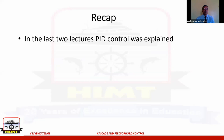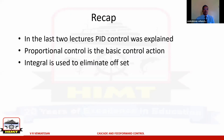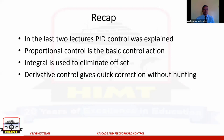To recap what we have already covered in the previous lectures: PID control was covered — proportional, integral, and derivative control, and combinations such as proportional plus integral and proportional plus derivative. Proportional control is the basic control action, integral control is used to eliminate offset, and derivative control gives a quick correction without hunting. P plus I is the most common type, used in around 70-75 percent of process control applications, with only another 20 percent requiring derivative.